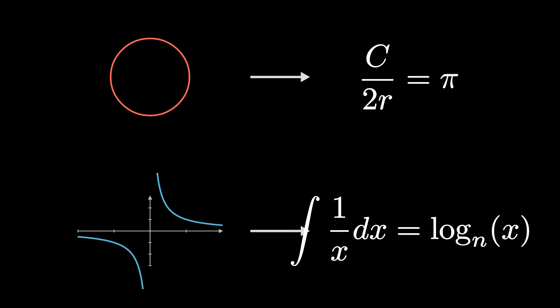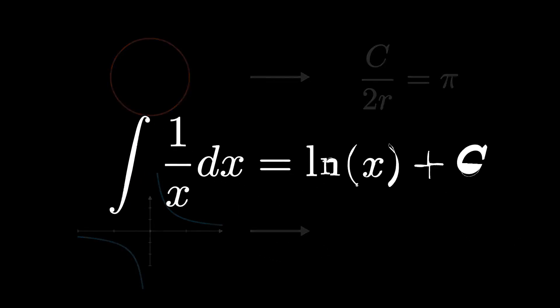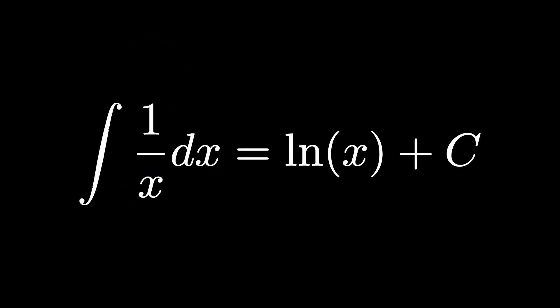This base, some natural base, is in fact e. And thus the surprising and beautiful answer to the area under a hyperbola is a natural logarithm. The antiderivative of 1 over x is simply ln of x.